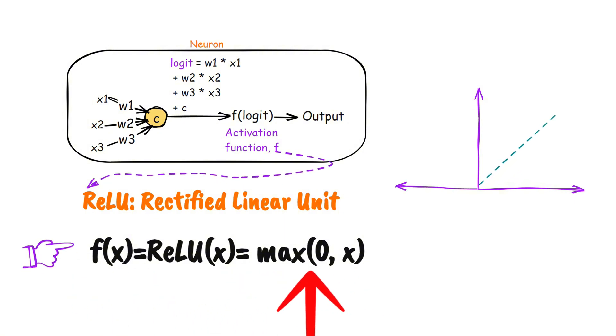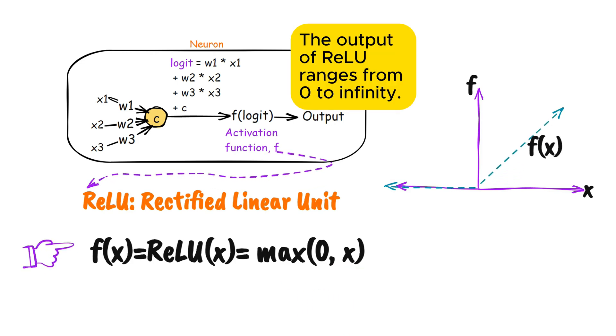For any input to the activation function, ReLU outputs zero if it is smaller than or equal to zero. Otherwise, ReLU outputs whatever the input is. Mathematically, if the input to ReLU is x, then the output of ReLU is the maximum of zero and x. The output of ReLU ranges from zero to infinity.